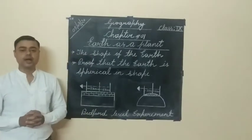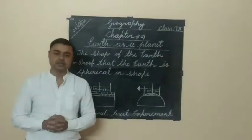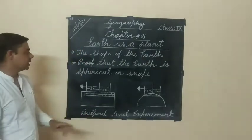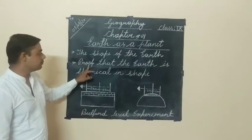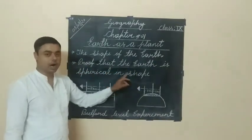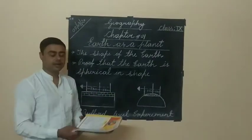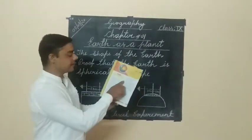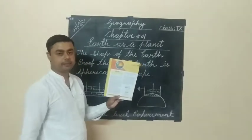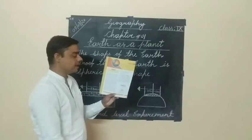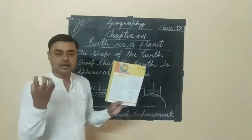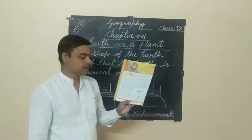We have a few experiments and examples that prove the shape of the Earth. The proof that the Earth is spherical is shown through the following examples. The first example is the Bedford Level experiment, which is very important.